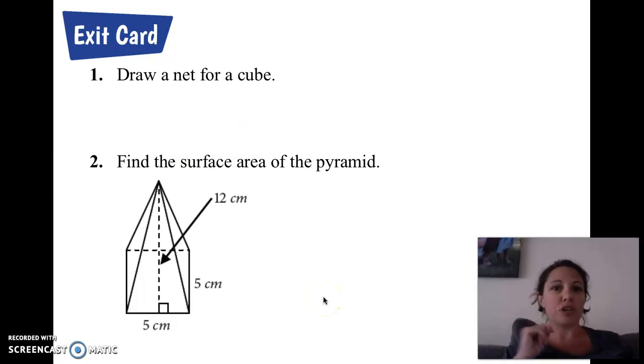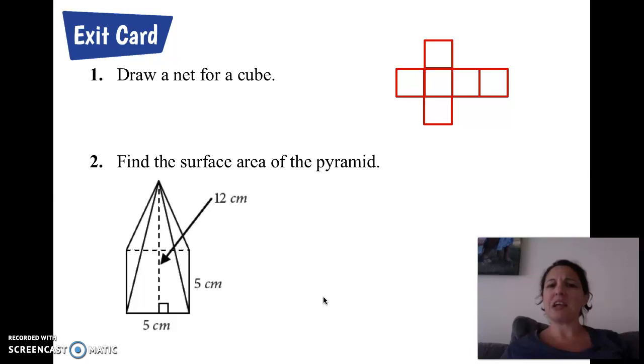How'd you do? Did you draw your net for a cube? If you remember, we had one of those earlier. This is one of those nets. It's not the only one. There are several, but this is the most famous one. How'd you do with your surface area? Did you break it down? You've got a base that's a square. 5 times 5, 25. You've got four triangles. One half the base times the height. So one half of 5 times 12. 5 times 12 is 60. Half of 60 is 30, but you don't have one. You have four. So 120 altogether. Plus the base gives you 145 centimeters squared. Did you get that? I hope you did.